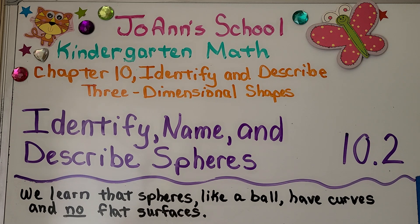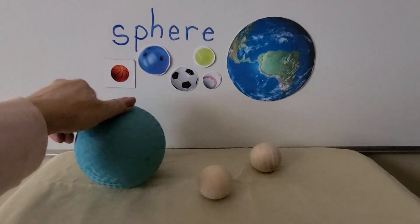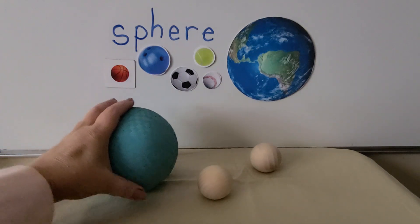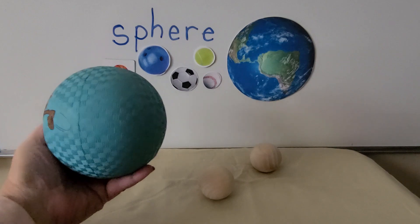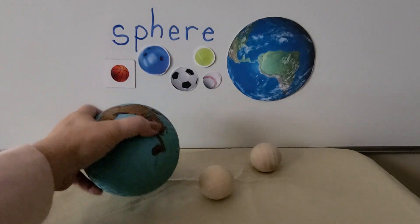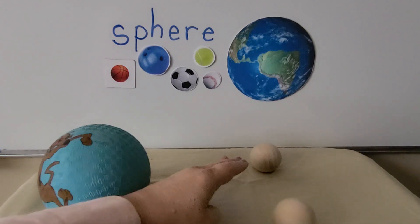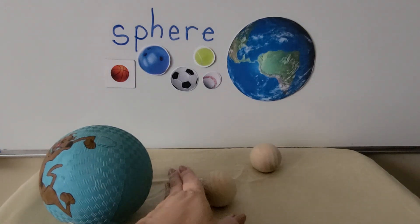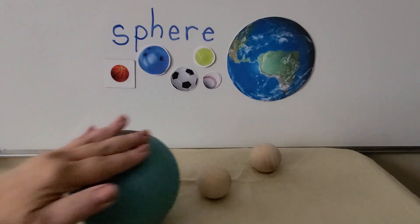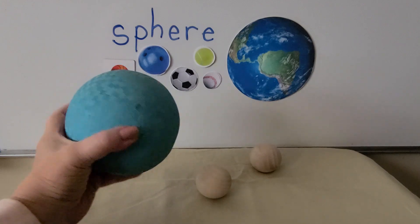We learn that spheres, like a ball, have curves and no flat surfaces. A sphere is round, like a ball. It has a curved surface. It does not have any flat surfaces. A sphere can roll — we can roll it back and forth. Its entire surface feels rounded.